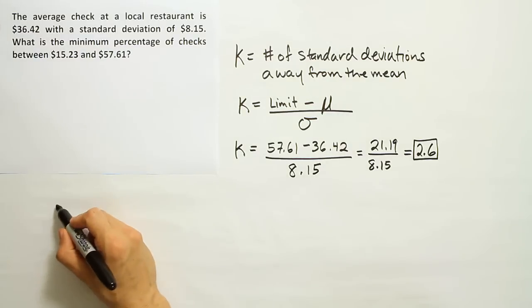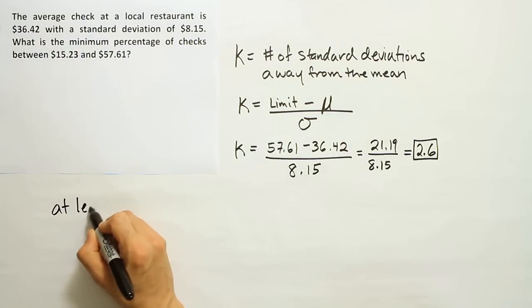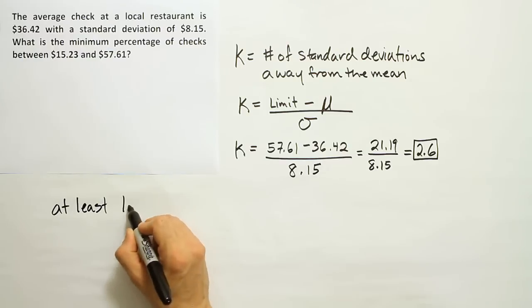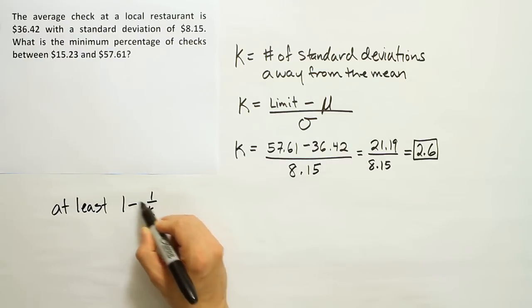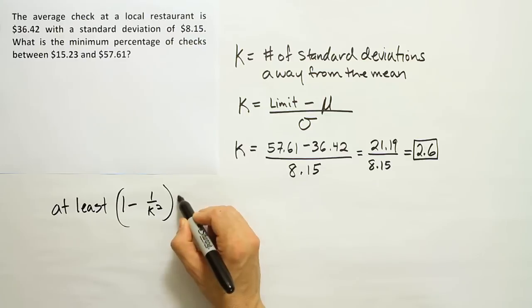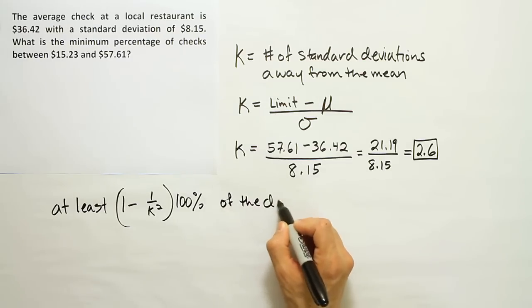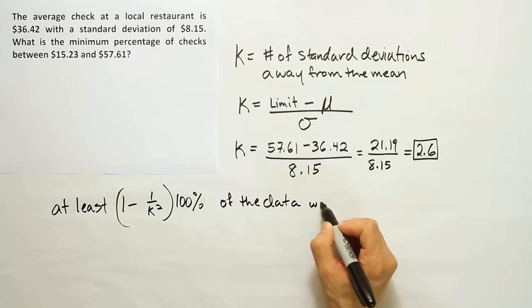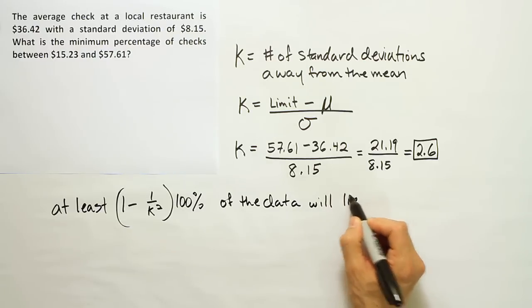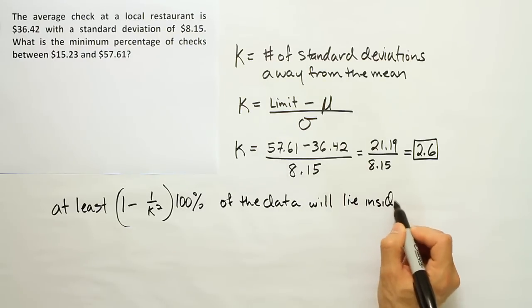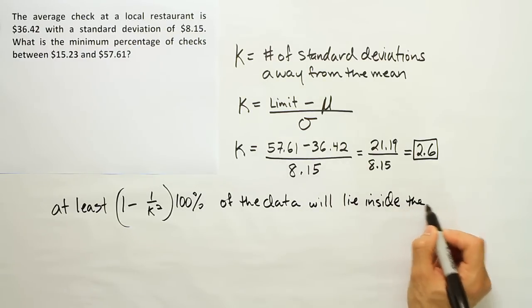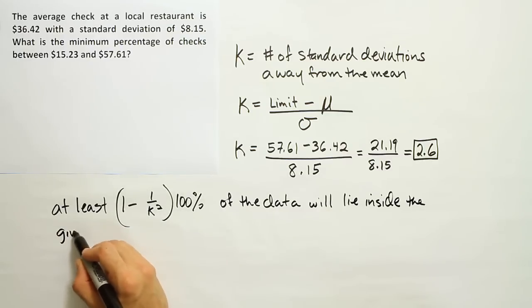So let's use the theorem now. The theorem states that at least 1 minus 1 over K squared times 100% of the data will lie inside the given interval.